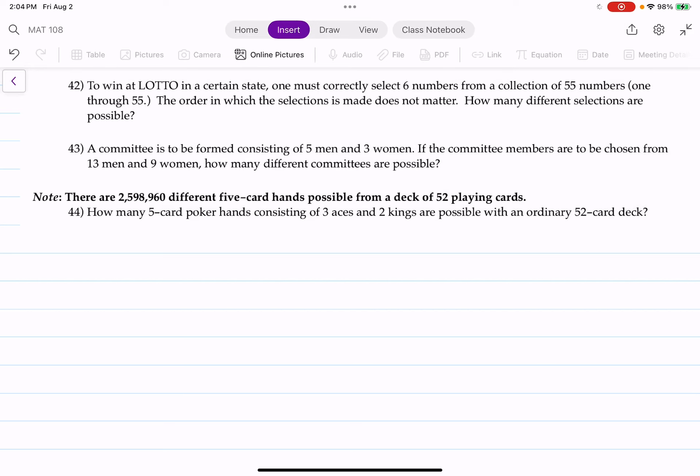All right, in this video we're going to answer questions 42 to 44. Let's read number 42. It says to win at Lotto in a certain state, one must correctly select six numbers from a collection of 55 numbers.